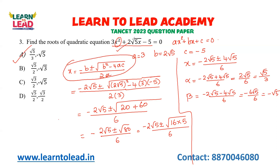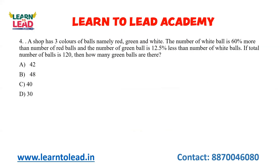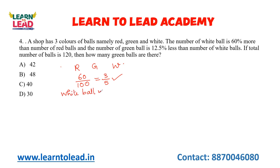Remember this formula — you can definitely expect a question based on this concept. The next question: a shop has three colors of balls, namely red, green, and white. White balls are 60% more than the number of red balls. 60% is equal to 3 by 5, so the relationship between white and red balls gives 8 white balls for every 5 red balls.